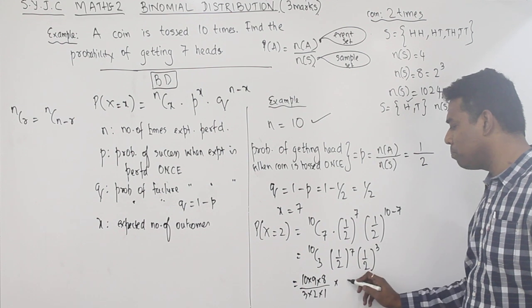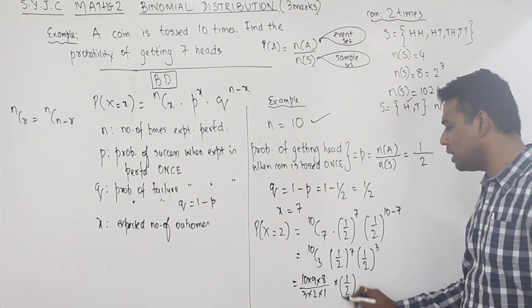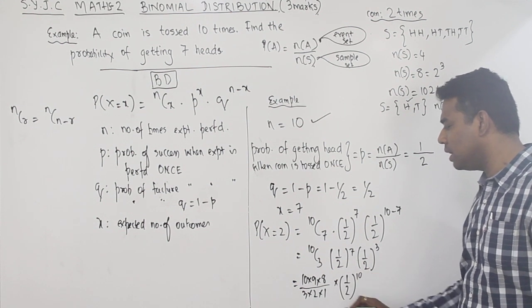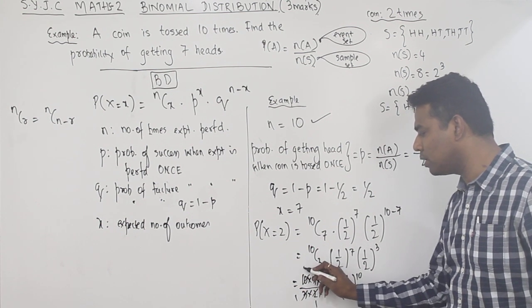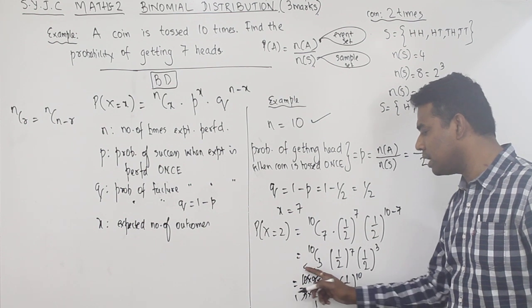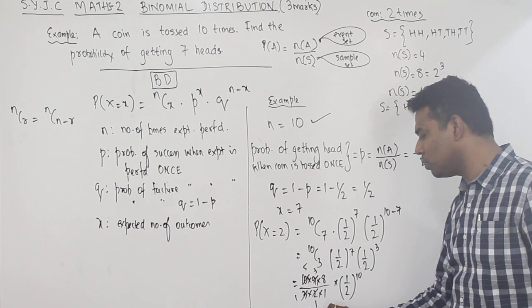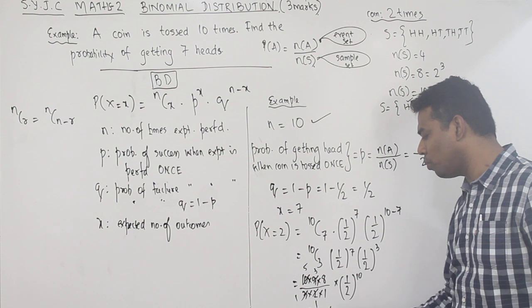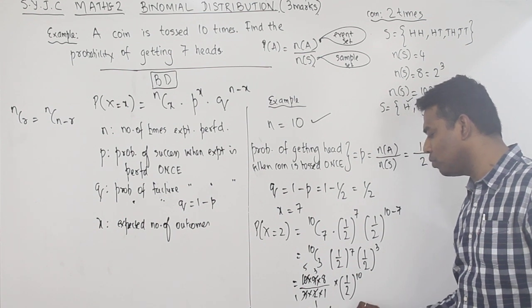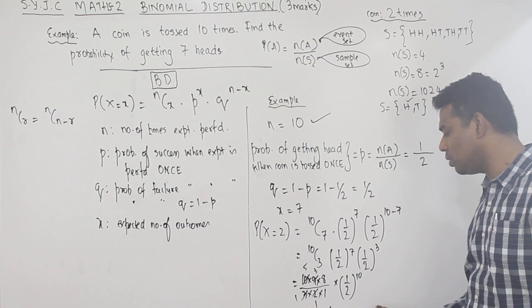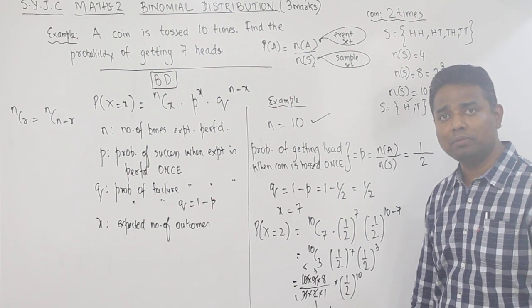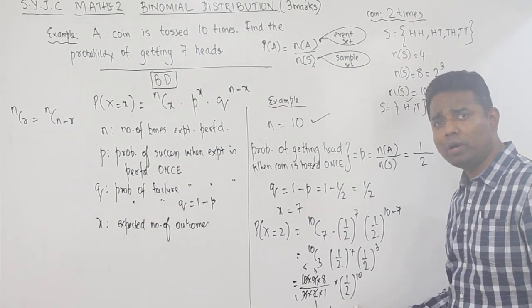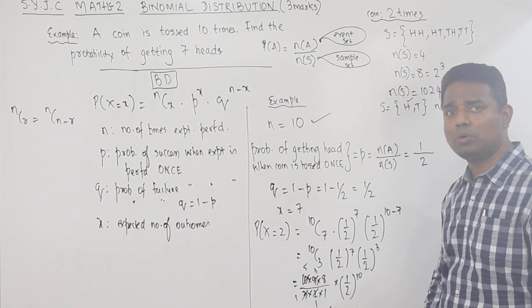Cancelling: 8 with 8, 3 with 3×2, we get 120 × (1/1024) = 120/1024. Reduce this fraction to get your final answer.